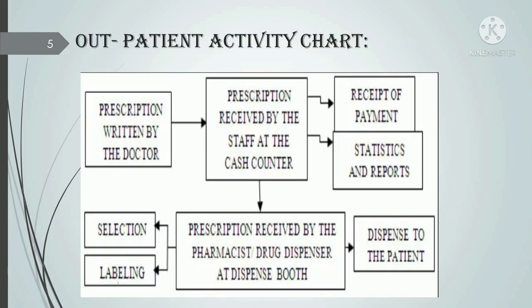Outpatient activity chart: First, prescription is written by the doctor. Then, this prescription is received by the staff at the case counter. Then, the prescription is received by the pharmacist, drug dispenser, or dispensing aid. Then, selection, labeling and dispensing to the patient. Finally, receipt of payment and compilation of statistics and reports.